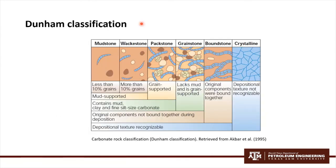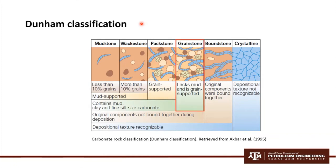One important aspect of carbonates is the complexity and relationship between grains and matrix. Dunham classified carbonates based on the internal structure and textures of the rock. First, mudstone consists mainly of matrix. Wackestone is also matrix-supported but has more grains. Packstone is mostly grain-supported. Grainstone includes less matrix and more grains. Boundstone is where the original material of carbonates was bound during deposition. And finally, crystalline, where the depositional texture is not recognizable.